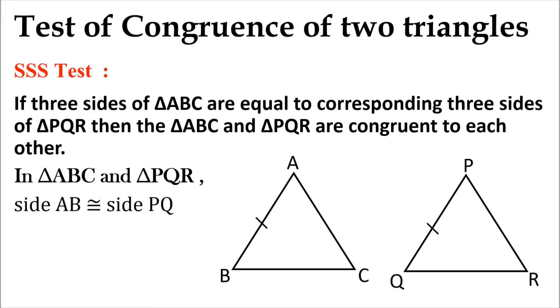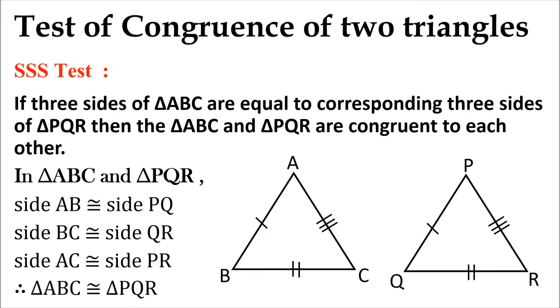Side AB is congruent to side PQ, side BC is congruent to side QR, side AC is congruent to side PR. Therefore, triangle ABC is congruent to triangle PQR.